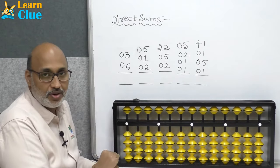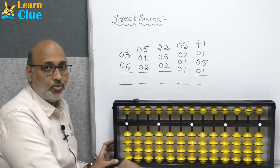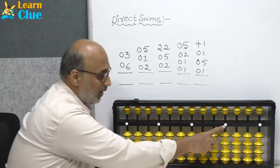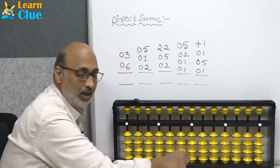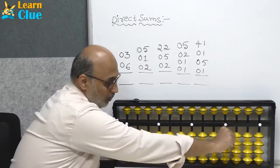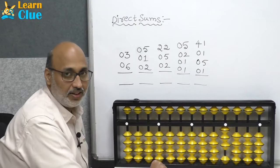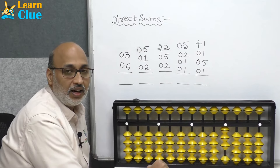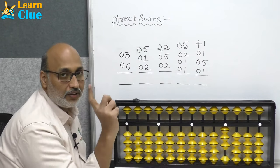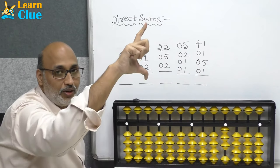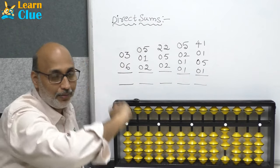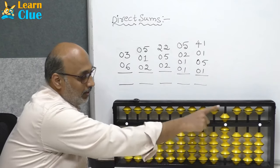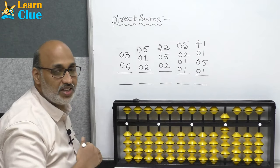See, the first problem: plus 3. We will consider this as the units place and start moving three — one, two, and three. Now they are asking add 6. Six is a butterfly number; you can directly pull five and one at a time. Count the entire number — what is the answer? Nine.